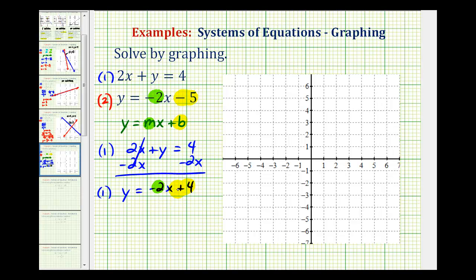If we want to graph the blue line, we'll first plot the y-intercept of positive four. Now to make use of the slope, we want it to be a fraction, so we'll put negative two over one. So the negative two tells us to go down two units, and the positive one tells us to go right one unit. So we'll go down two, right one. Let's do that again, down two, right one. And now we'll sketch the first line.